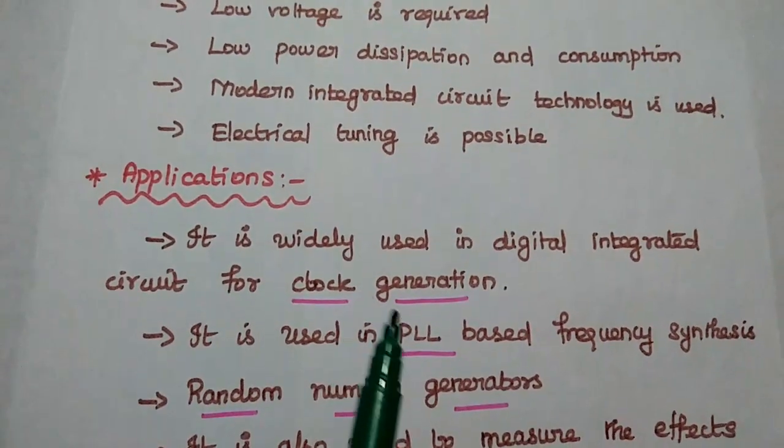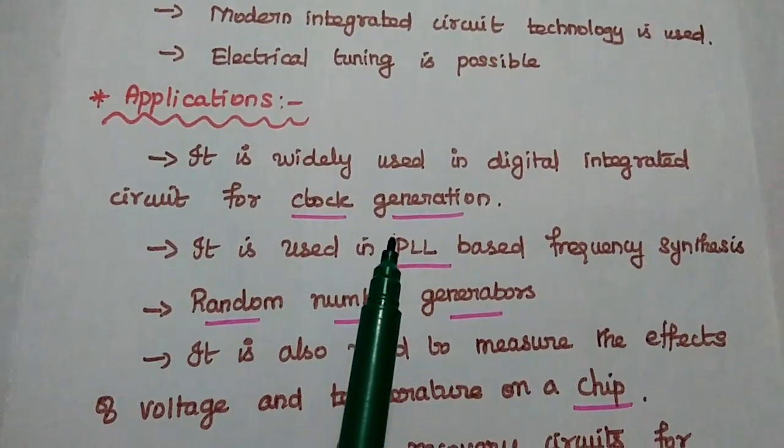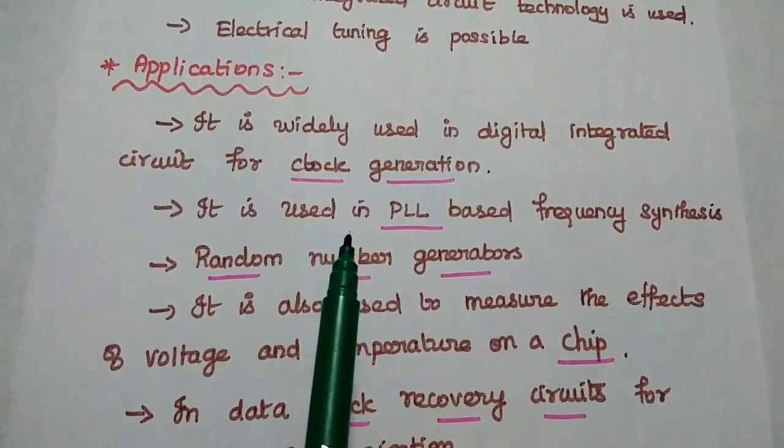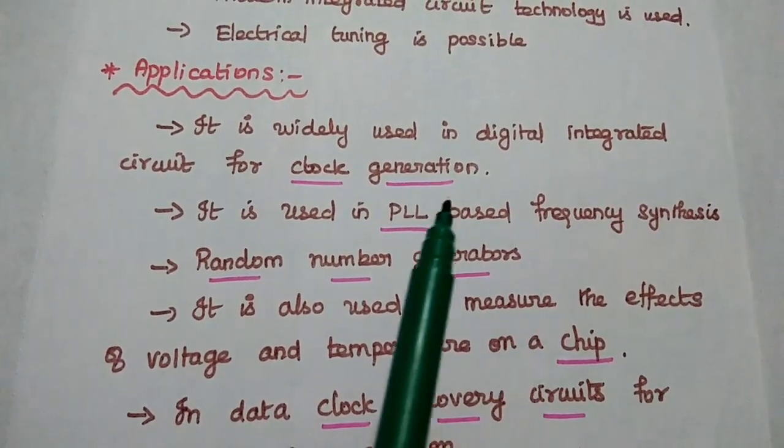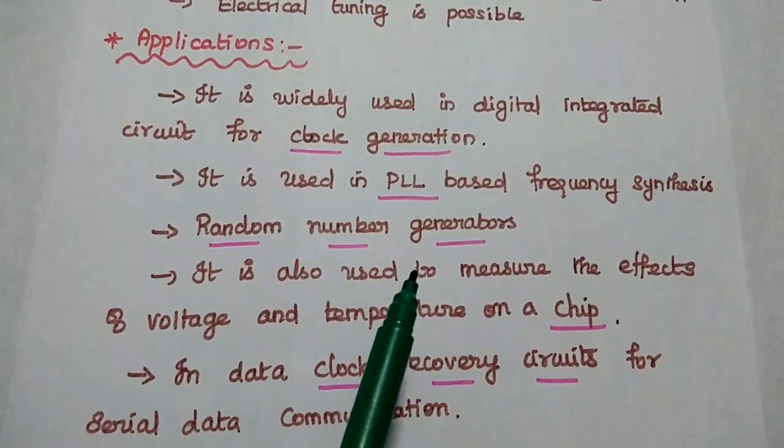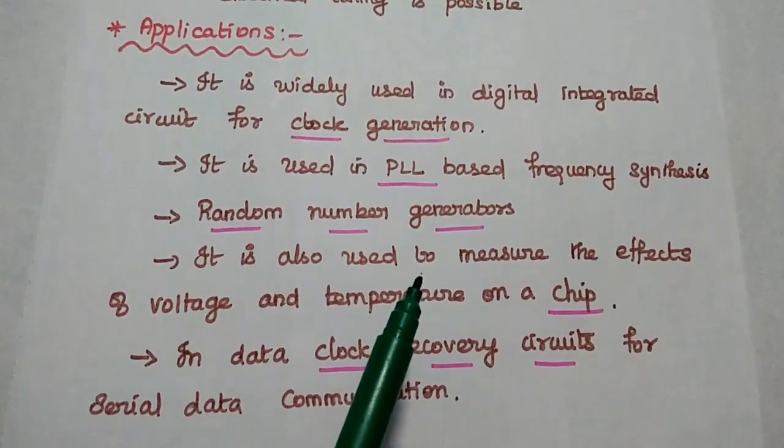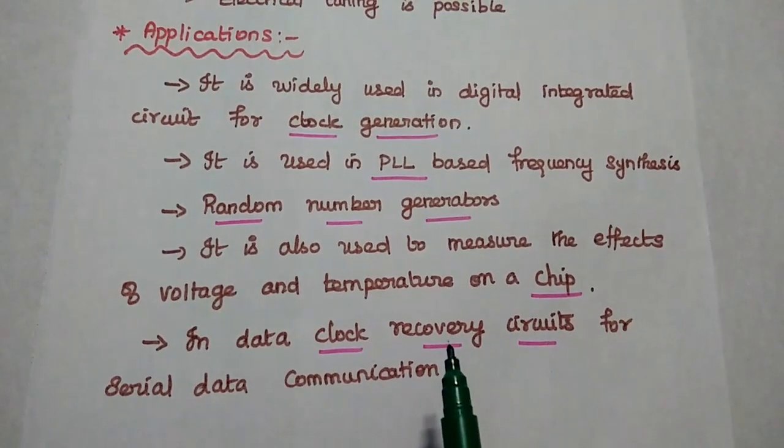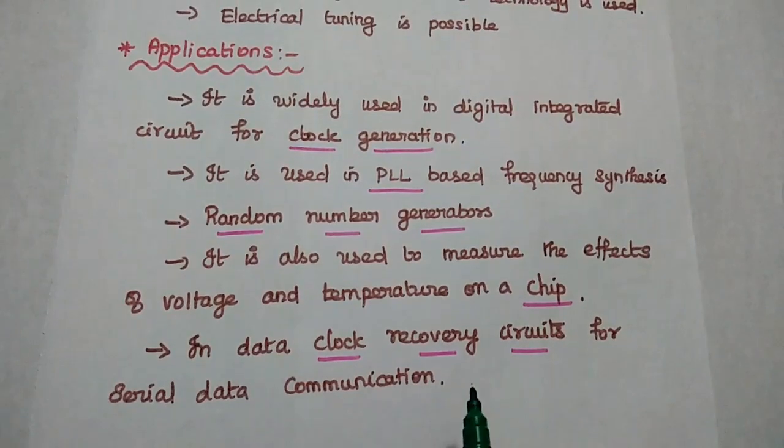The applications of the ring oscillators are given here. It is widely used in digital integrated circuits for clock generation. It is used in phase-locked loop (PLL) based frequency synthesis methods. It is also used in random number generators. It is used to measure the effects of voltage and temperature on a chip. It is also used in data clock recovery circuits for serial data communication.